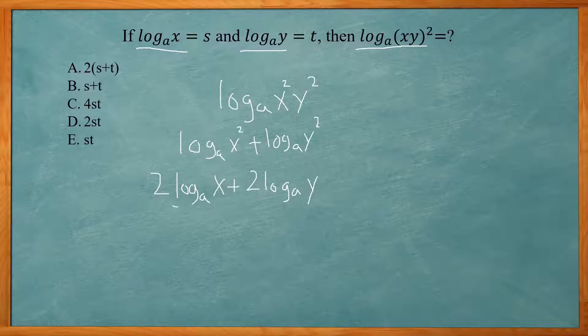Now I have it where log base a of x is equal to s, log base a of y is t, so that's 2s plus 2t. Looking at your answer choices, we don't have anything exactly like that, but it looks like I can factor out a 2, so then we have 2 times the quantity s plus t. So answer A is correct.